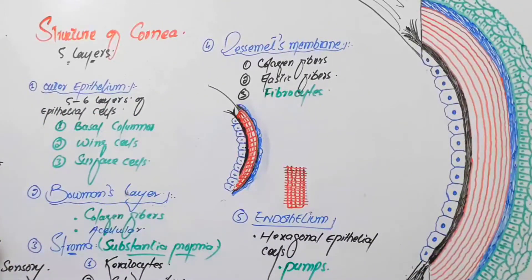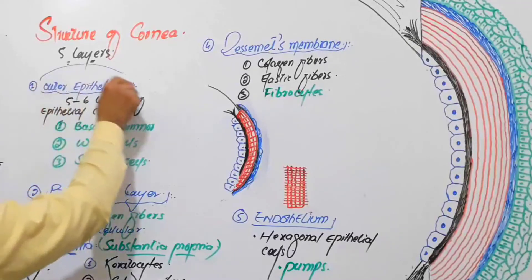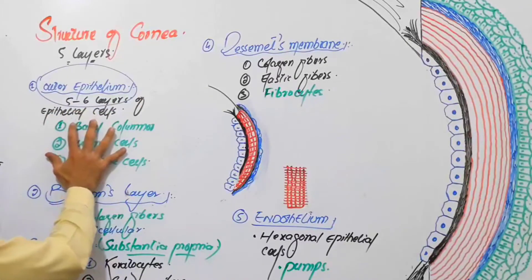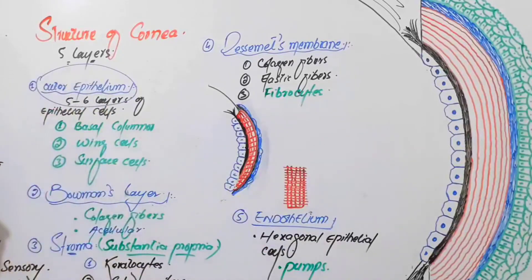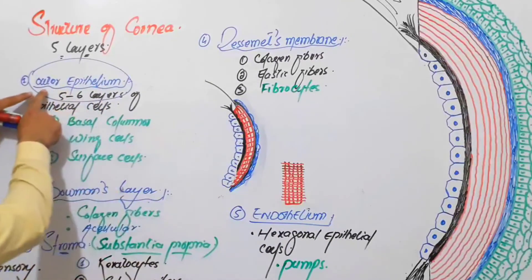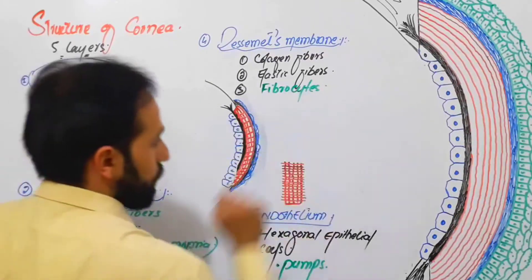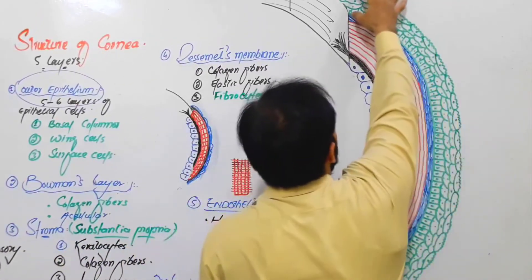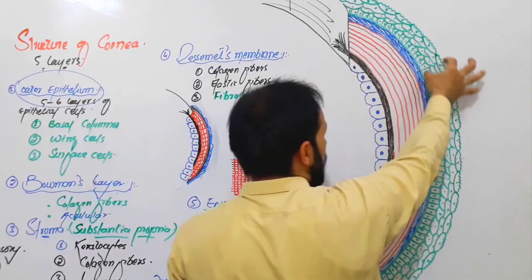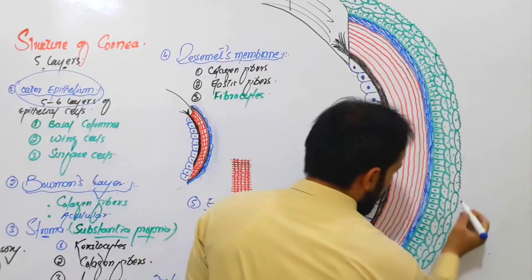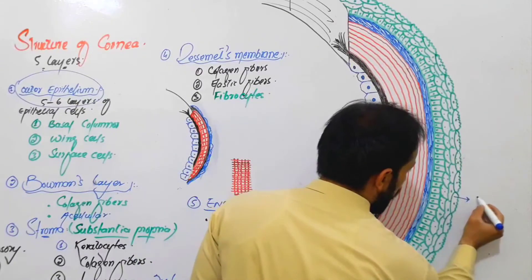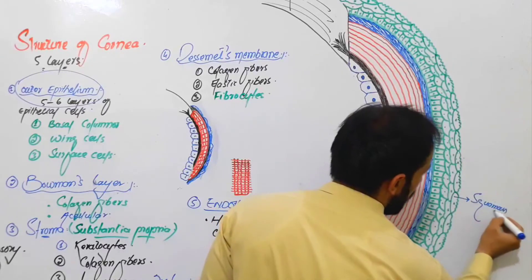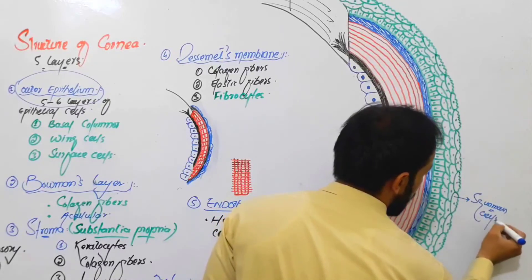About the structure of the cornea: the cornea is composed of an outer epithelium. There is the outer epithelium with the outer surface cells being squamous cells. Which type of cells? Squamous cells, and since there are many layers, we say stratified squamous.